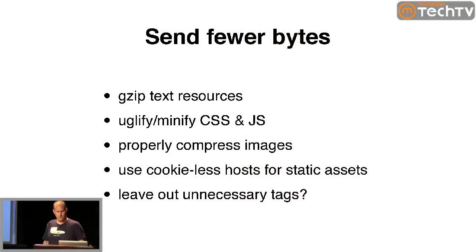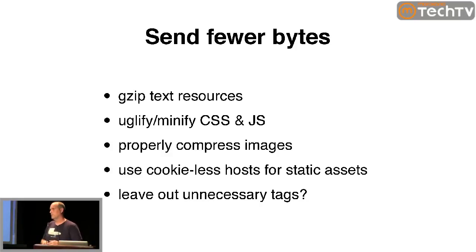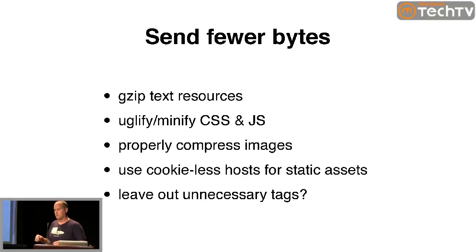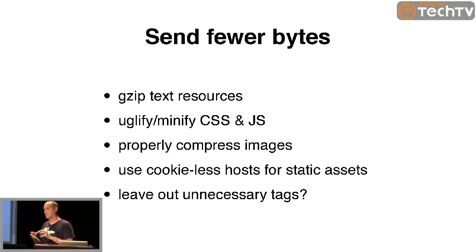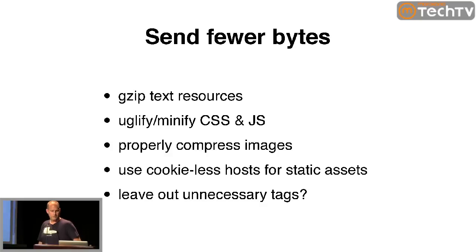Of course you want to send fewer bytes as well. Gzip everything — pretty simple, pretty common. Uglify or minify your CSS and JavaScript. Properly compress images. You may be tempted to do everything as PNGs, but a lot of times things are better done as JPEGs, like if it's a gradient. We fight with our designers to get things compressed down to their tolerance level for pixelation, but these things make a big difference to users. Using cookieless hosts for static assets — there's no sense in sending cookies back and forth if you're sending an image. Most CDNs take care of this for you. You can also leave out unnecessary HTML tags to save a few bytes; browsers will add them automatically.